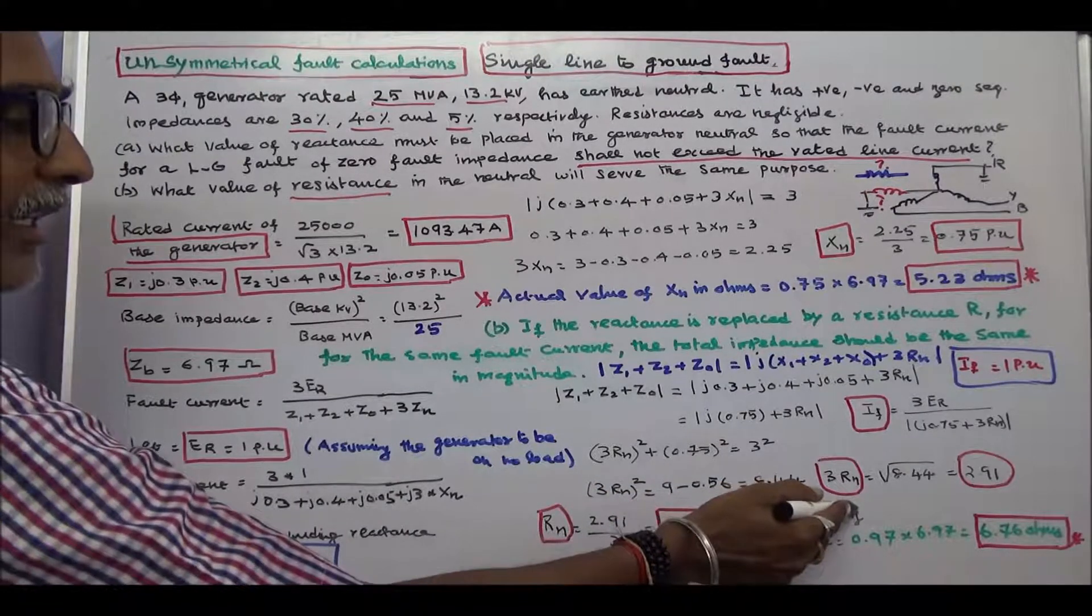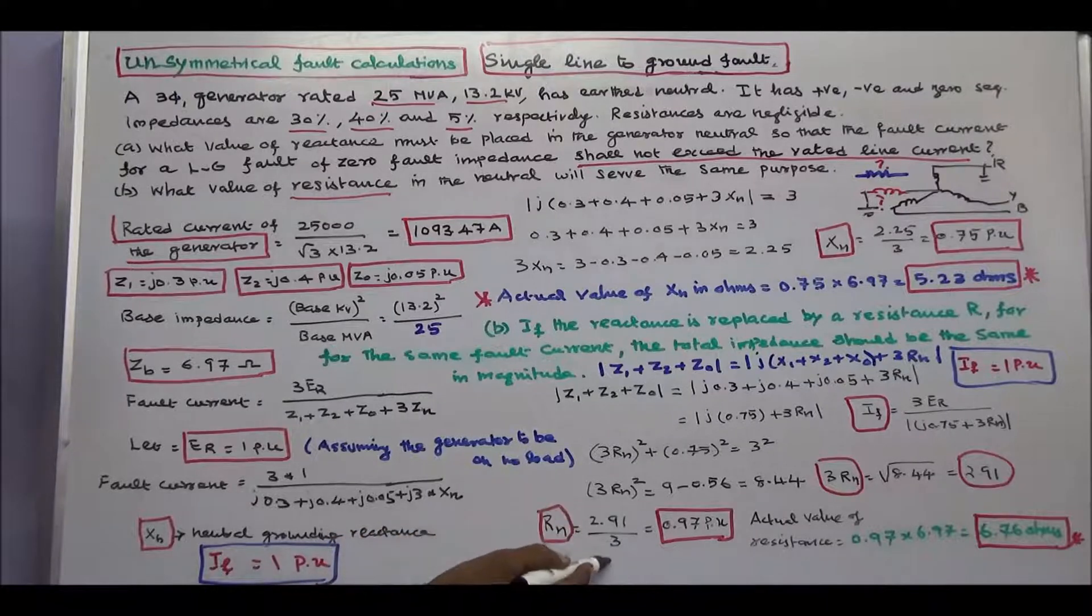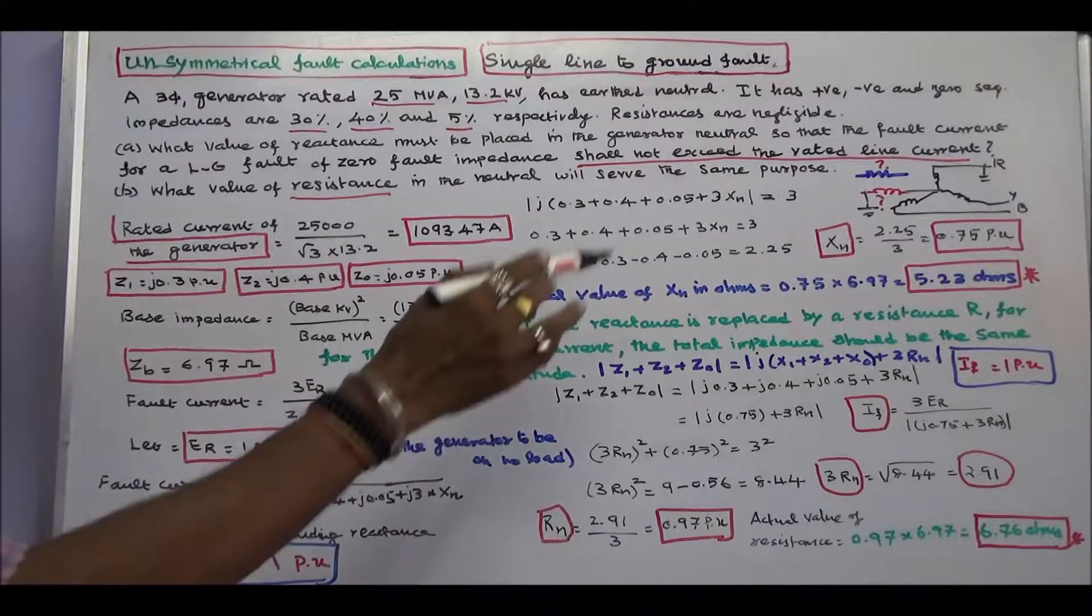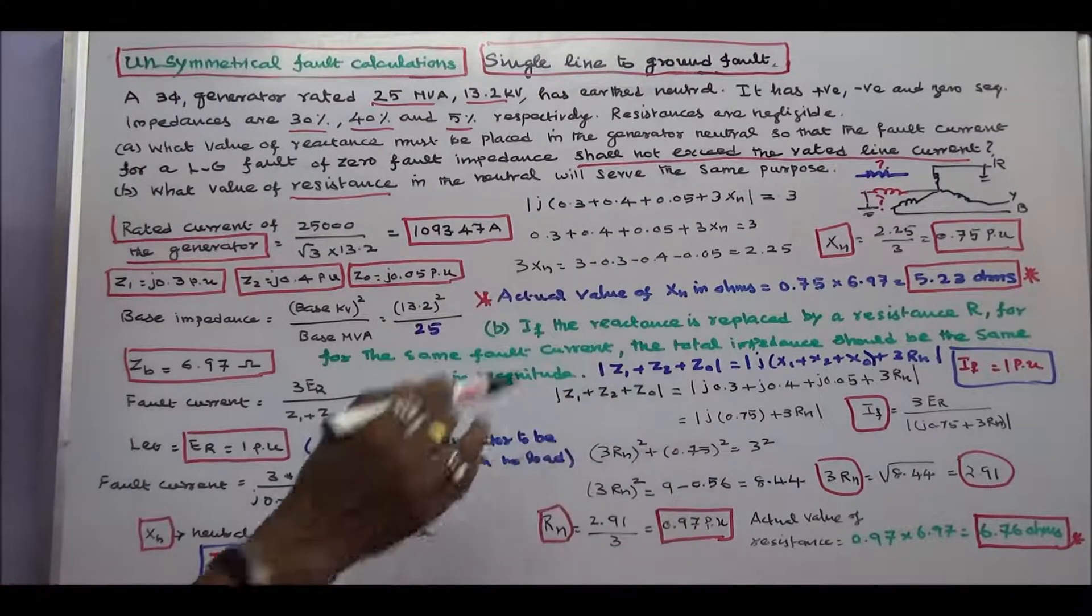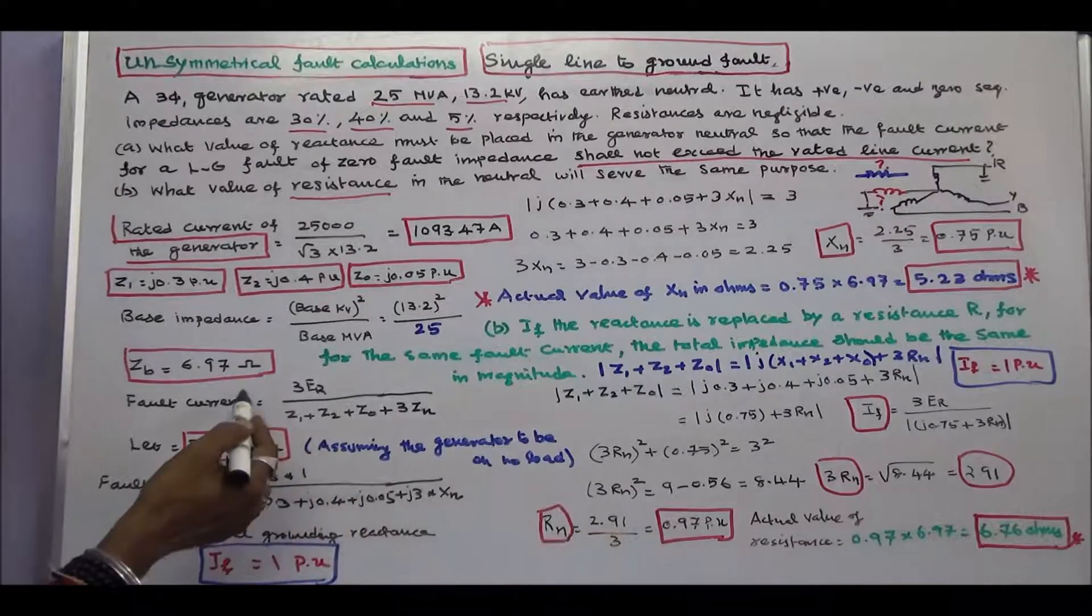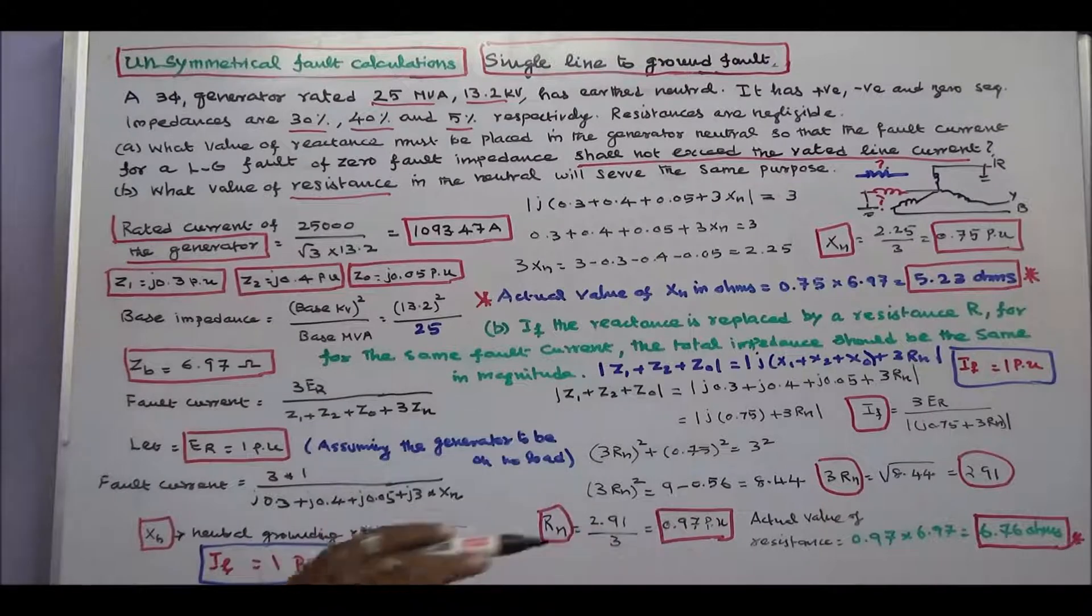That is, 3Rn is equal to 2.91. Rn is equal to 2.91 by 3, that is equal to 0.97 per unit. The resistance value is 0.97 per unit. Actual value of the resistance is per unit value into base value, 0.97 into 6.97, that is equal to 6.76 ohms.